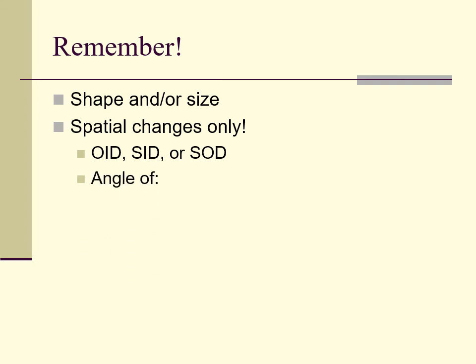The other effect of distortion is angulation. Specifically, shape distortion occurs with angulation. Angling the tube is the most common form of beneficial distortion. Generally, angulation is used to open up joint spaces or to display anatomy free of superimposition. The closer the image receptor is to the anatomy, the less the image will distort and move relative to the image receptor.